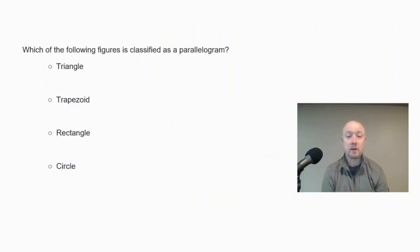Which of the following figures is classified as a parallelogram? Is it a triangle, trapezoid, rectangle, or circle? The first thing we want to look at is parallelogram. A parallelogram is a type of quadrilateral. So quadrilaterals have four sides. So we're going to eliminate a triangle, has three sides. A circle is not part of the polygons, so a circle is eliminated.